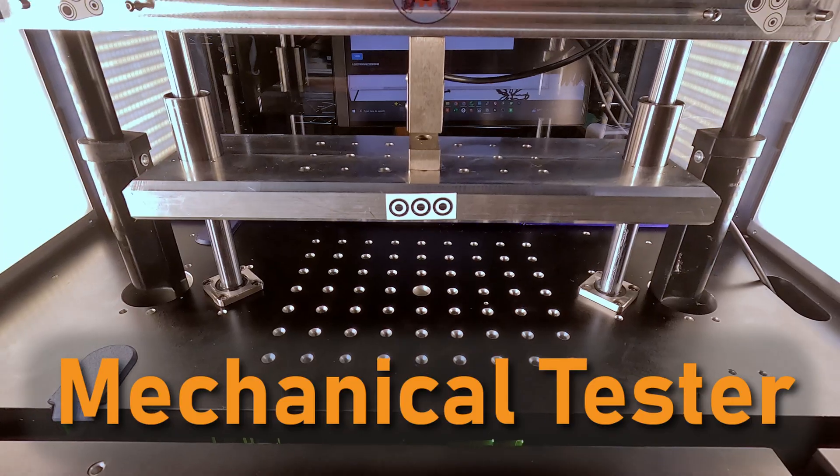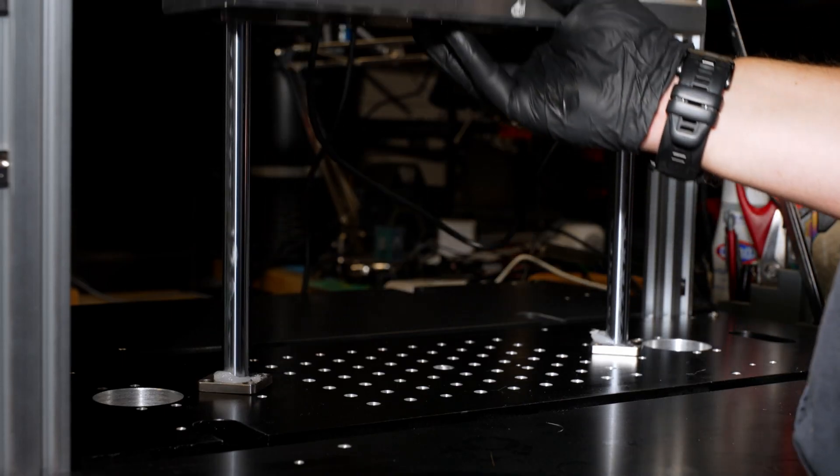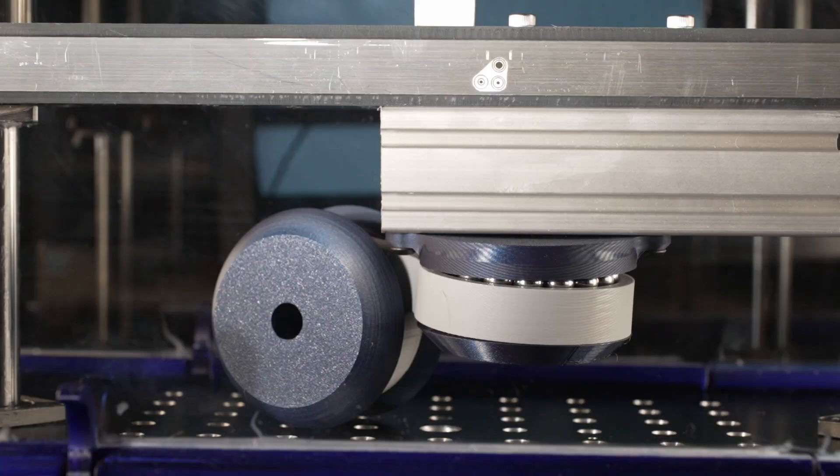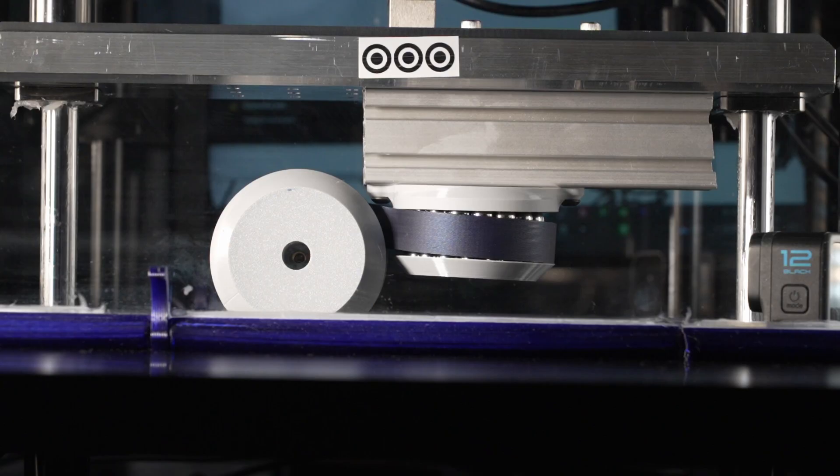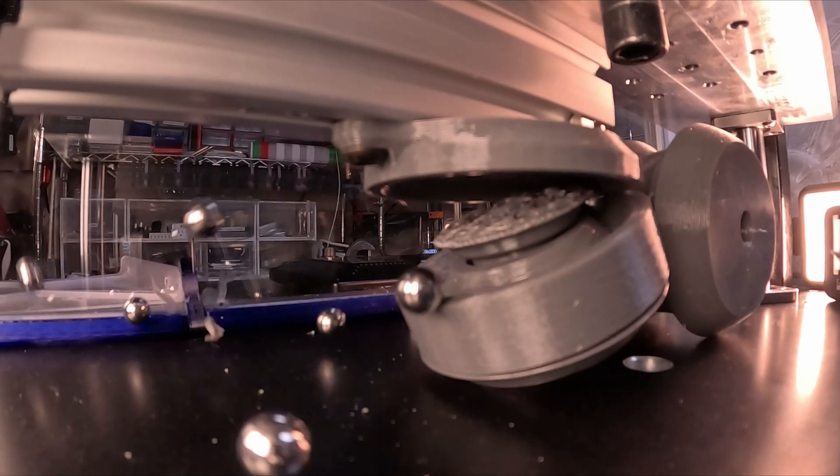So naturally, I decided I'd need me a mechanical tester, and today I want to take a look at how I went about making myself one. And in case you're curious, I've now tested a handful of those PETG casters, and they've given up at anywhere between 50 and 150 pounds.